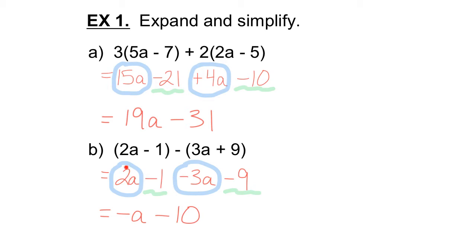So here 2a minus 3a — well, 2 minus 3 is minus 1, so we have minus 1a, or you can just write it as minus a. Minus 1 minus 9 — again, we're starting negative and getting more negative, down to minus 10. So we have negative a minus 10 as our simplified expression.